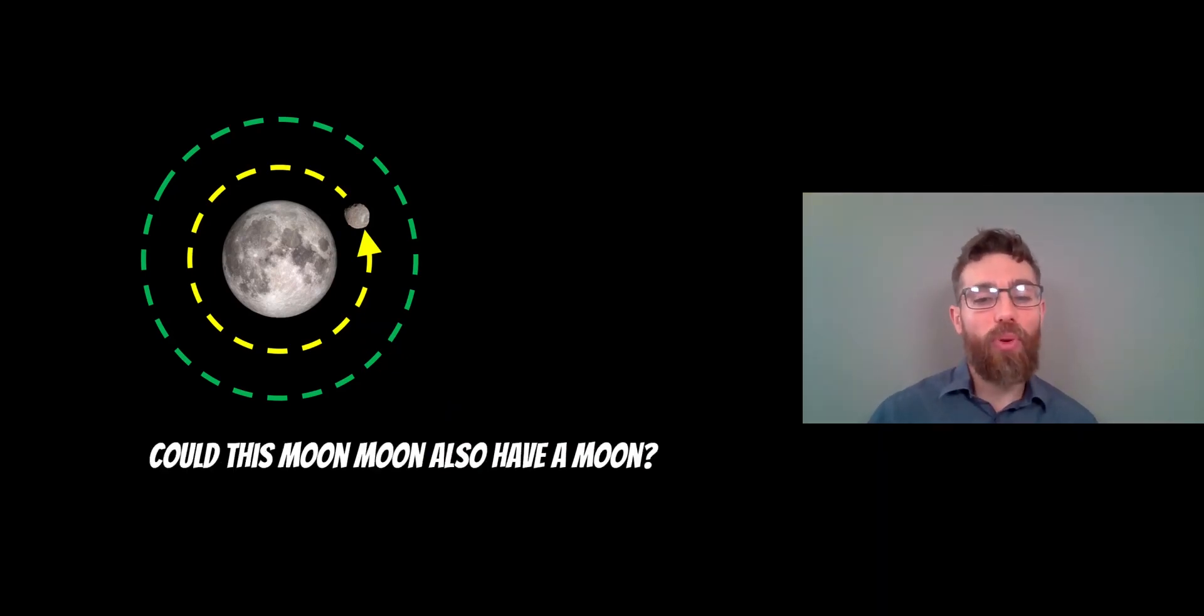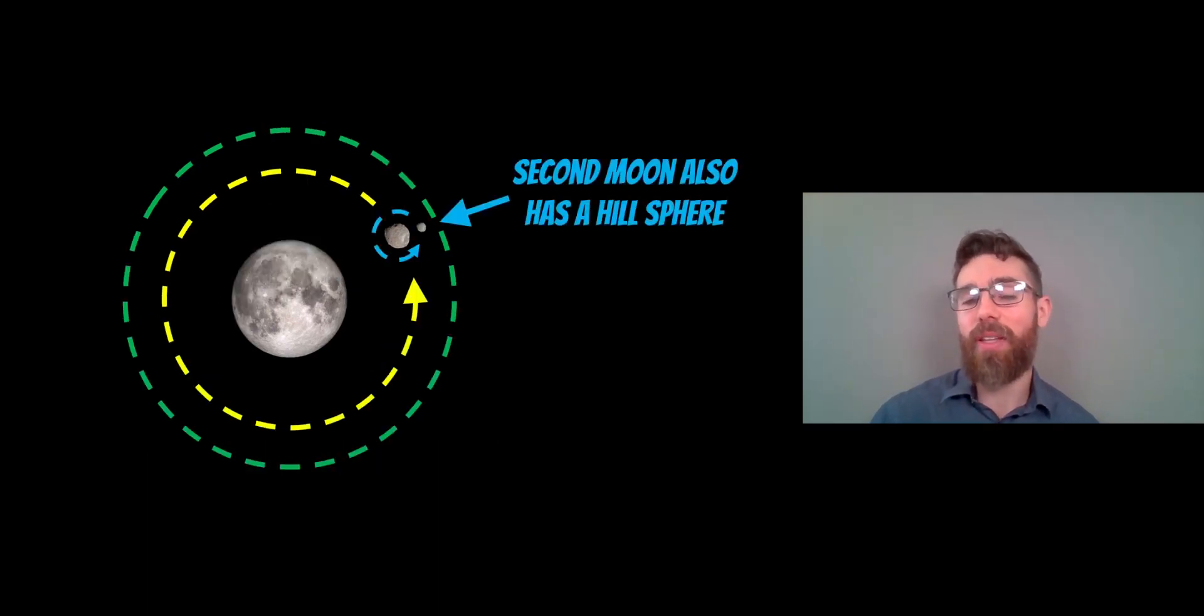But could that moon, or that moon moon, also have a moon? So we've got a small moon orbiting a moon, but then that second moon will also have its own hill sphere. Now that hill sphere will be very small and obviously it scales down the smaller you get.